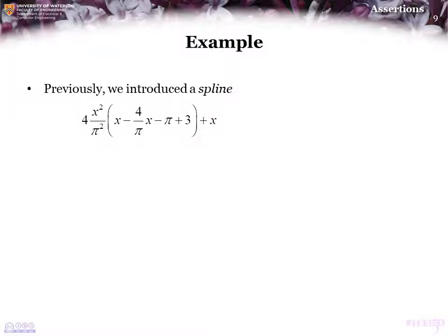Now, you may recall in a previous topic, we introduced the following cubic spline. This is a cubic polynomial that has a value of 0 when x equals 0, a value of 1 when x is equal to pi over 2, a slope of 1 when x is equal to 0, and a slope of 0 when x is equal to pi over 2.